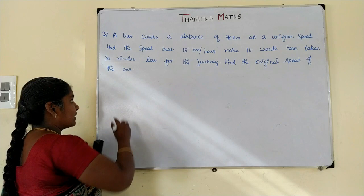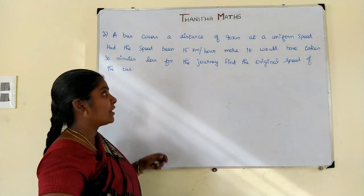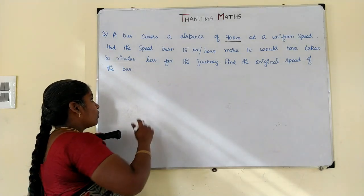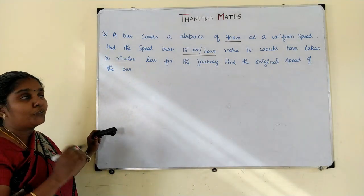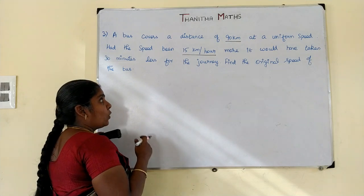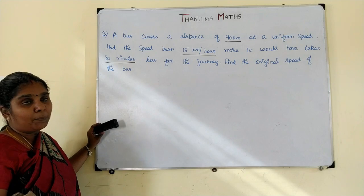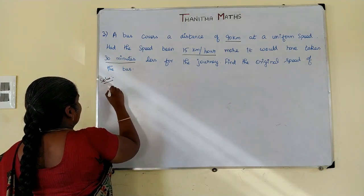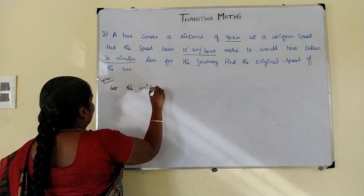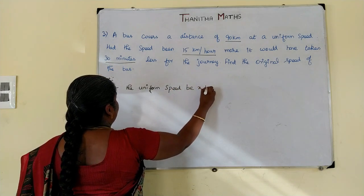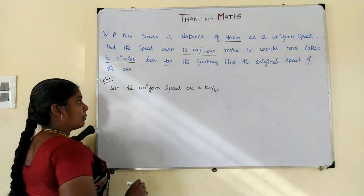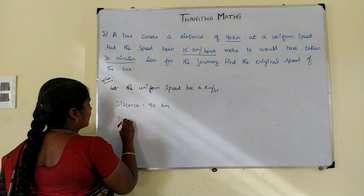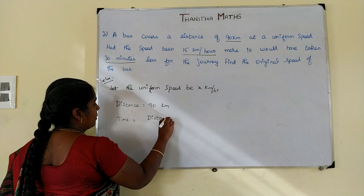Let the uniform speed be x kilometer per hour. The distance is 90 kilometers. Time taken is equal to distance by speed.